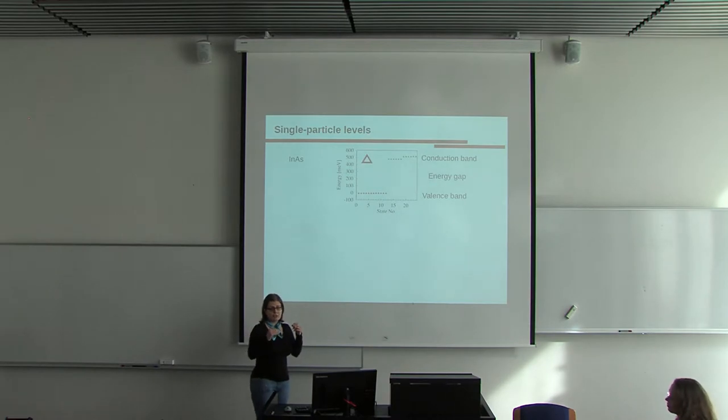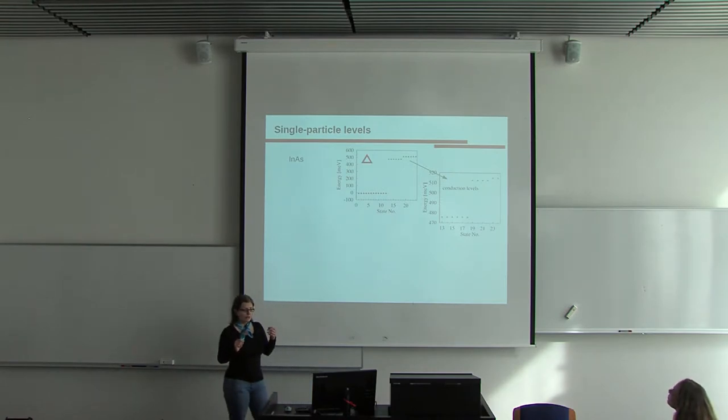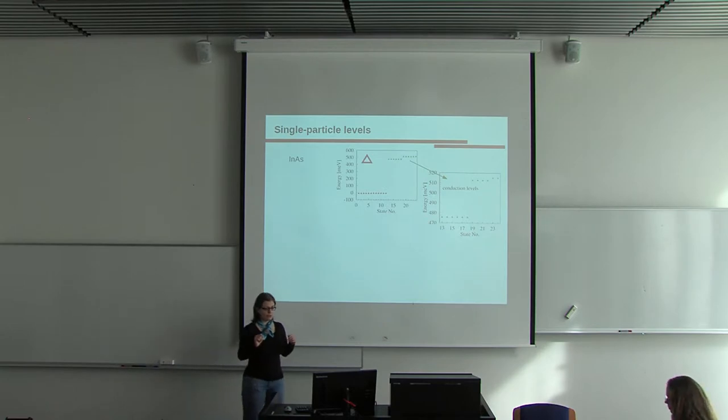For the triangular quantum rings, the energy levels are arranged into groups of six states and each band has its own unique structure. As you can see here, there is another energy gap in the conduction band that separates the lowest group of states from the second group. But still, this gap is much lower than the main gap.